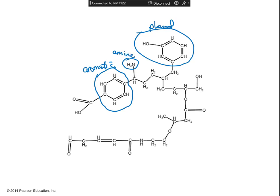Keep looking — do you see another nitrogen? This one has a double bond oxygen on the carbon to the left. Look at all the carbons connected to the nitrogen — if any of them have a double bond oxygen, the carbon might be on the left, right, above, or below. If any of them have a double bond oxygen, then that means this whole thing is an amide.